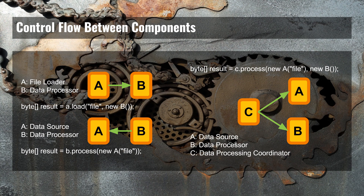This may sound a little hypothetical, so let's have a look at a more concrete example. Imagine that component A is capable of loading a file and component B is capable of processing a file — for instance, calculating a hash value or something like that from the file.